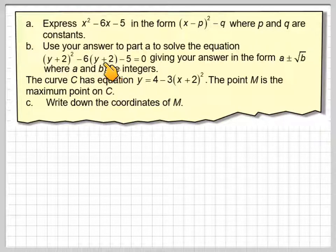Use your answer to part a to solve the equation (y + 2)² - 6(y + 2) - 5 = 0, giving your answer in the form a ± √b, where a and b are integers.